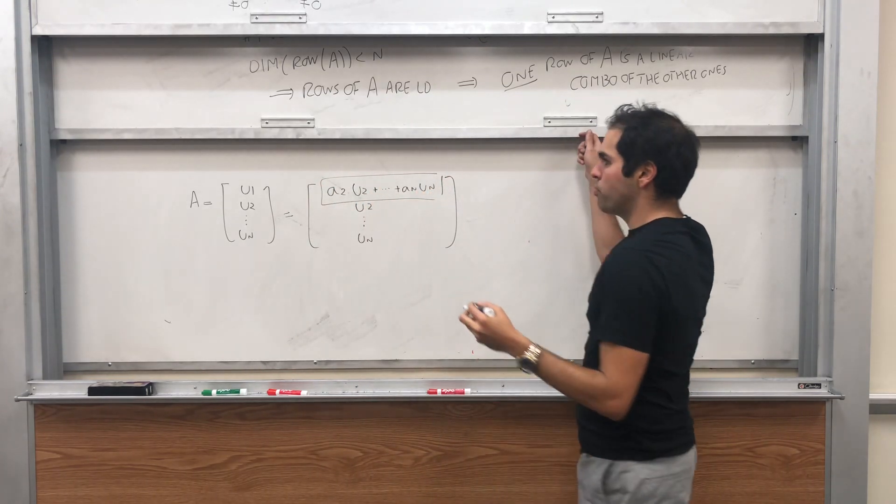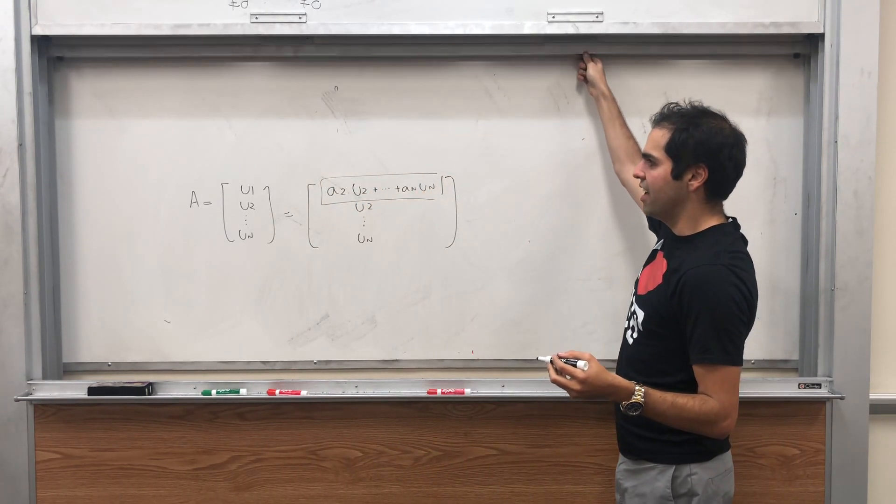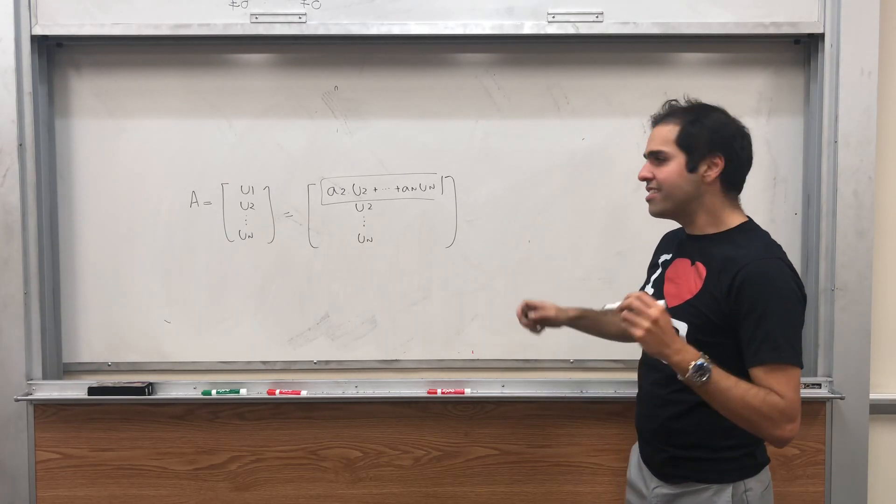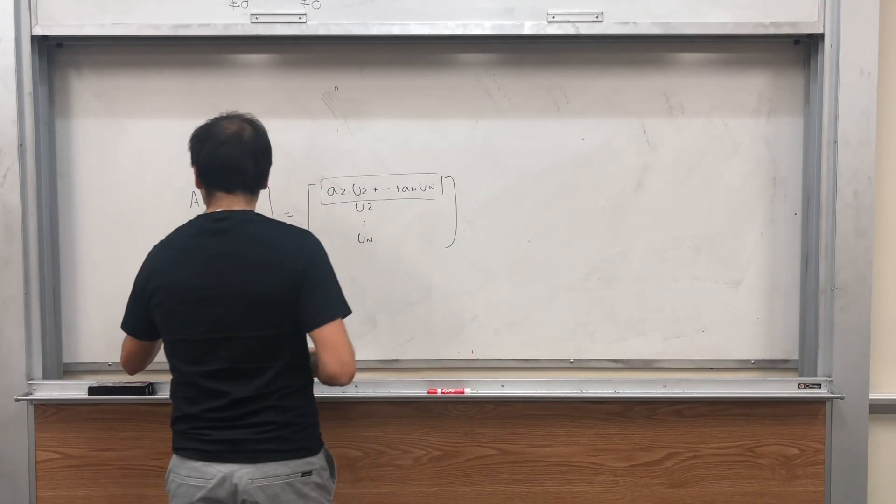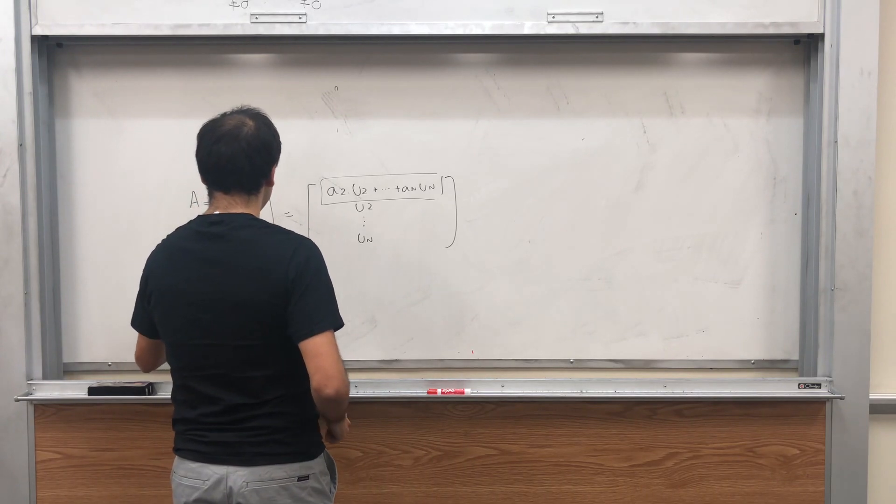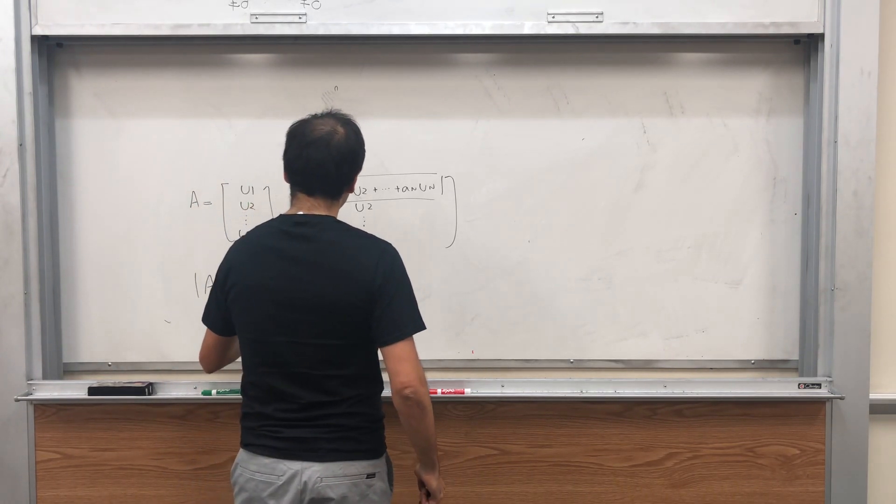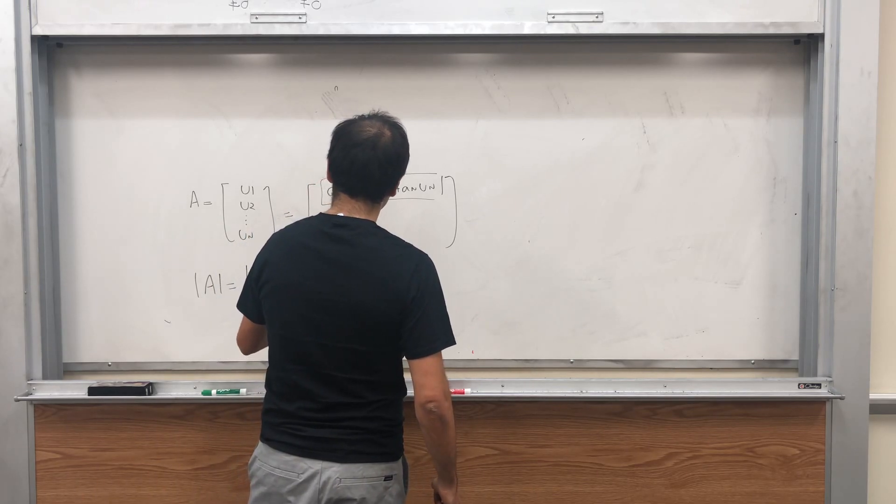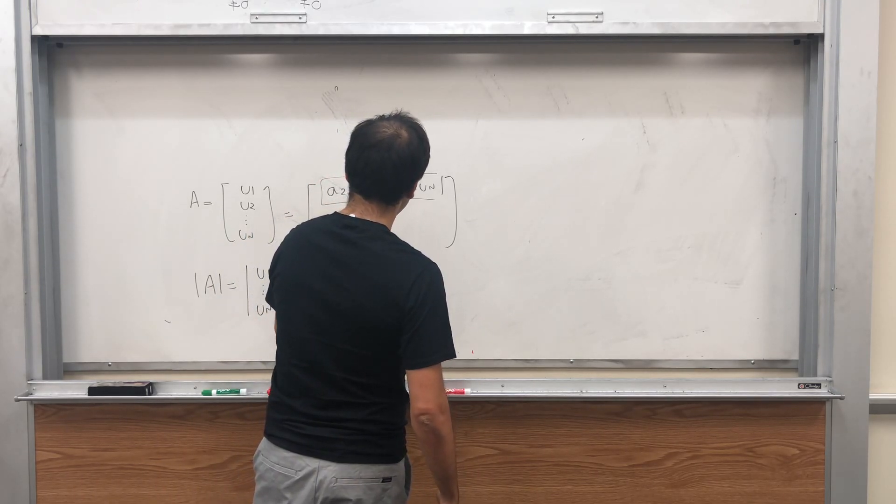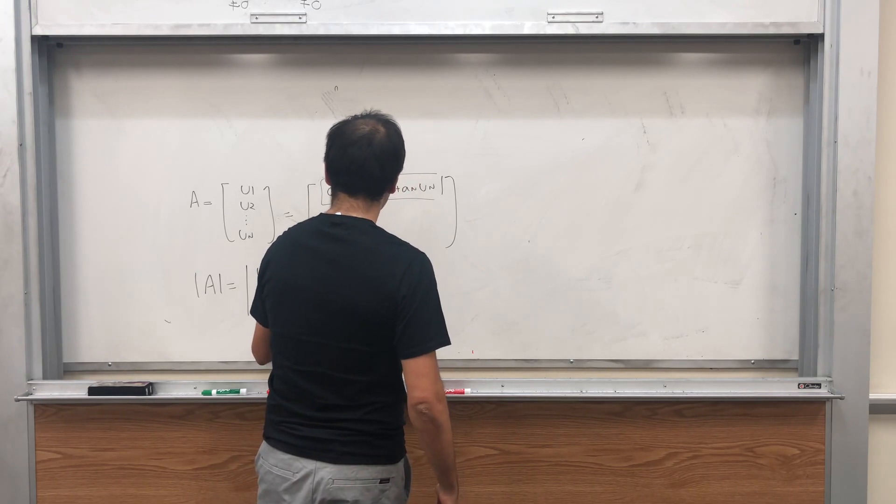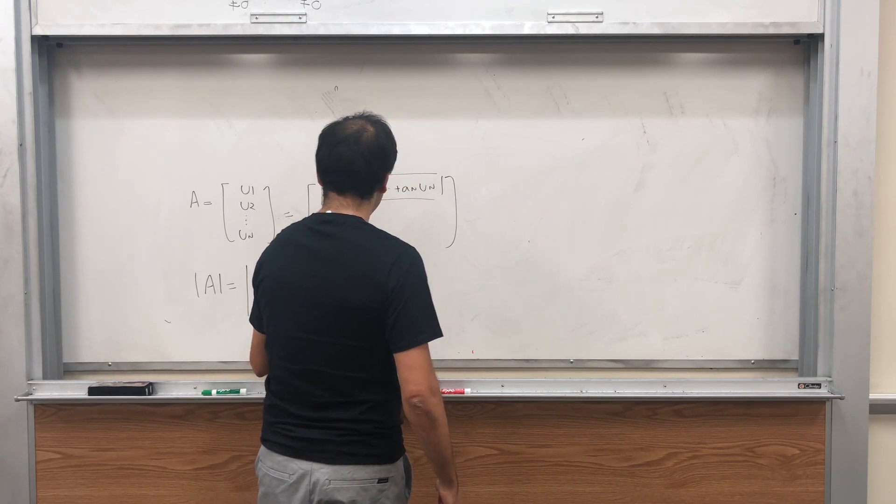And now, remember, a nice property of the determinant is that it's multilinear. So in other words, it's linear in the first row. So determinant of U1 up to UN, that becomes the determinant of A2 U2 dot dot dot plus AN UN, and then U2 up to UN.